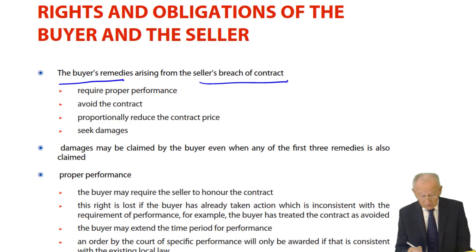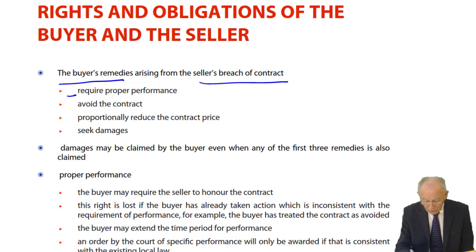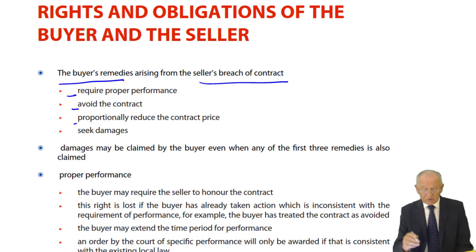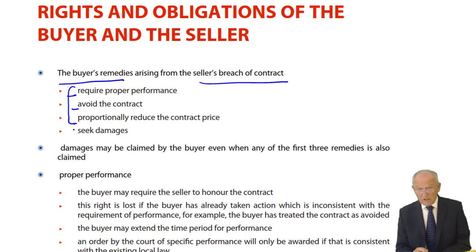These rights for the buyer are very similar to the rights for the seller in the event that the buyer commits the breach. So we have: require proper performance, avoid the contract, proportionally reduce the contract price, and seek damages. Those first three are very similar to the seller's rights in the event that the buyer breaches. Either party may seek damages to compensate them for the financial loss suffered as a result of the other person's breach. We'll talk about damages towards the end of the lecture.